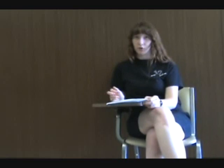When we plug 20 divided by 25 divided by 17 into 2 pi divided by k, we get negative 2 cosine of 20 pi divided by 17 times t. You can use the equation to find the height of the lasso at any given time. It's a shame Travis lost his lasso.